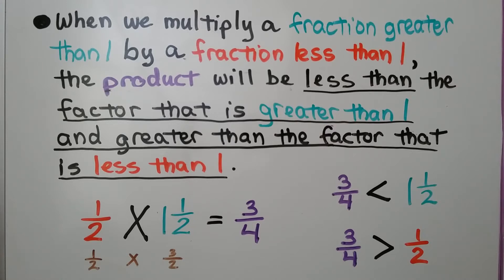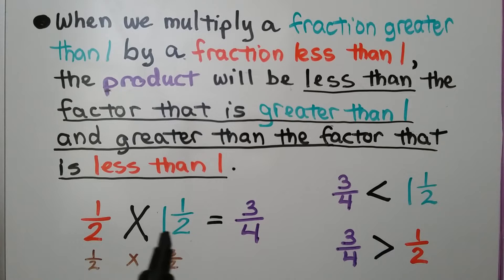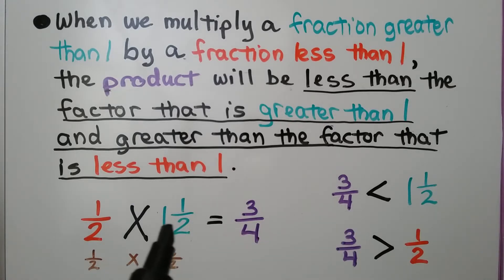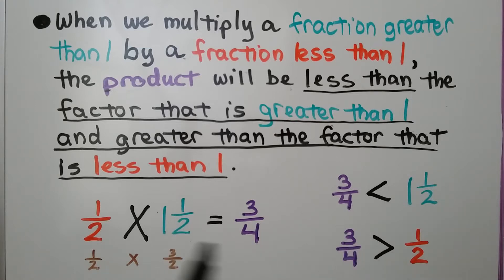When we multiply a fraction greater than 1 by a fraction less than 1, the product will be less than the factor that is greater than 1 and greater than the factor that is less than 1. Here we have 1 and 1 half, which equals 3 halves — a fraction greater than 1 — multiplied by 1 half. Our product is 3 fourths, which is less than 1 and 1 half and greater than 1 half.